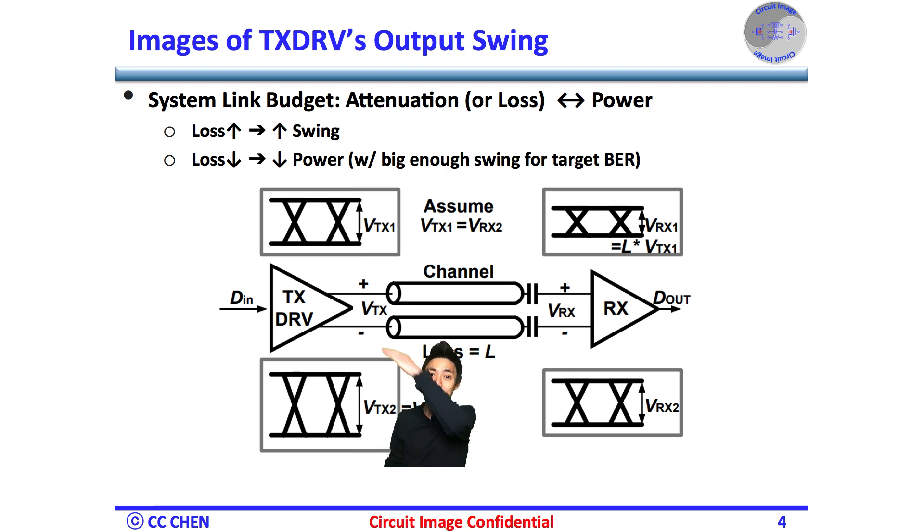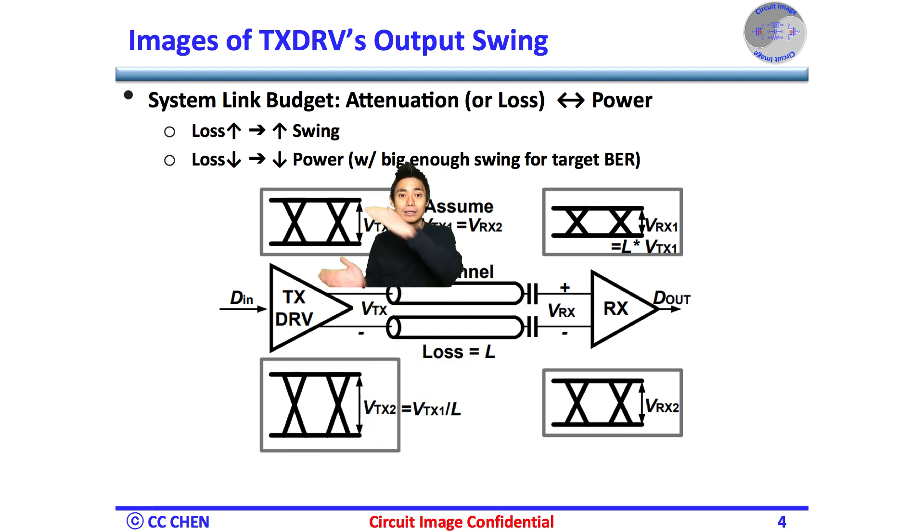Again, the TX can send a big swing VTX2 for sure, but that has power penalty. Therefore, it could send a lower swing VTX1 to save power as long as the swing was confirmed to be okay in the link budget. Therefore, first of all, we must put the output swing of the link budget in the eye height estimation.